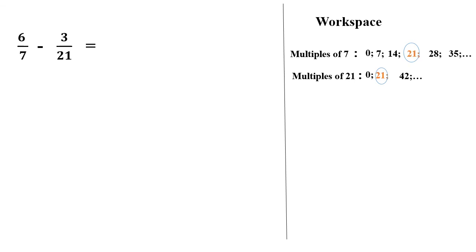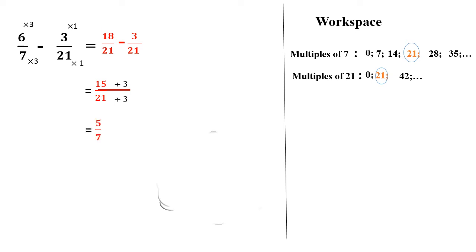To transform 7 into 21, we multiply it by 3. We must multiply both the numerator and denominator by 3 to not change the fraction, so we multiply 6 and 7 by 3. To transform 21 into 21, we multiply by 1. This gives us 18 over 21 minus 3 over 21. Now we subtract the numerators: 18 minus 3 equals 15 over 21. We reduce this fraction by dividing both numerator and denominator by 3: 15 divided by 3 over 21 divided by 3. The final answer is 5 over 7.